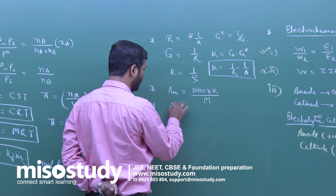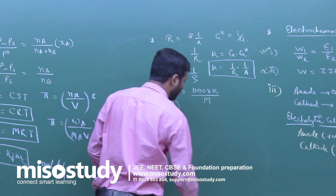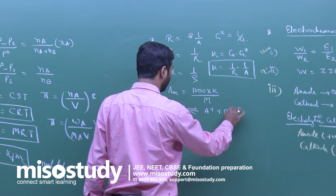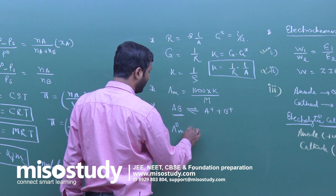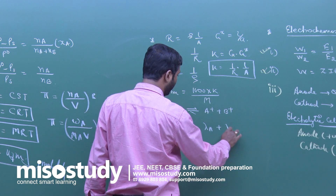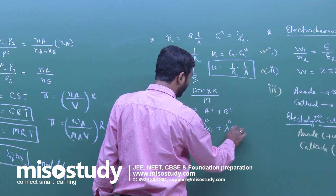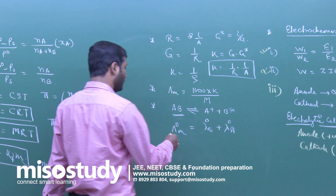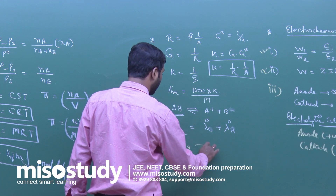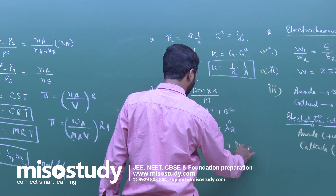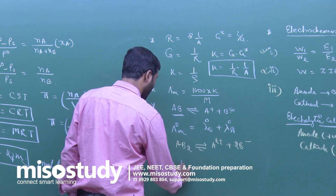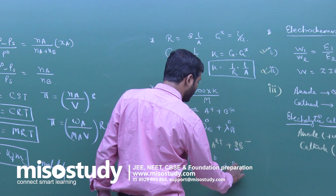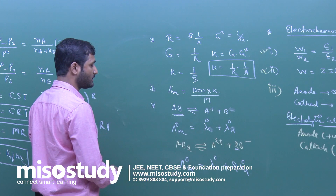Molar conductivity at infinite dilution can be found using Kohlrausch's law. Suppose we have compound AB, which dissociates into A⁺ and B⁻. Then the molar conductivity at infinite dilution of AB equals the ionic conductivity of the cation A⁺ plus the ionic conductivity of the anion B⁻. For example, for AB₂ dissociating into A²⁺ and 2B⁻, the molar conductivity at infinite dilution = ionic conductivity of A²⁺ + 2 × ionic conductivity of B⁻.